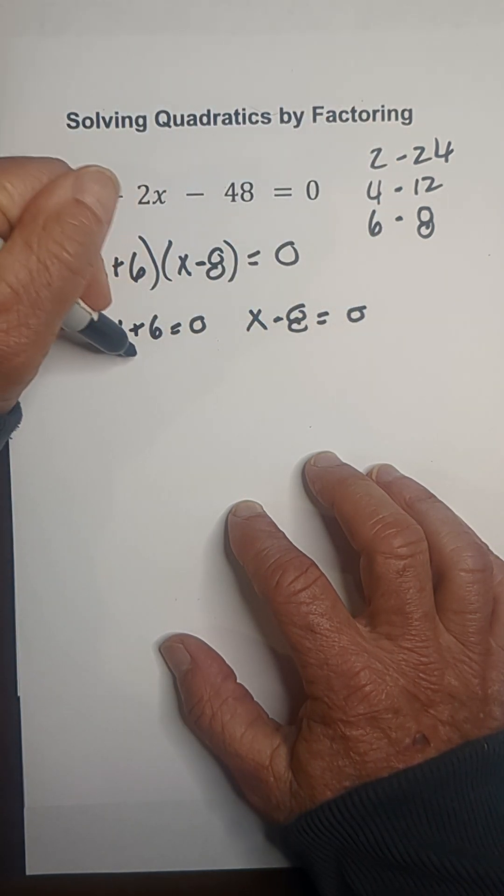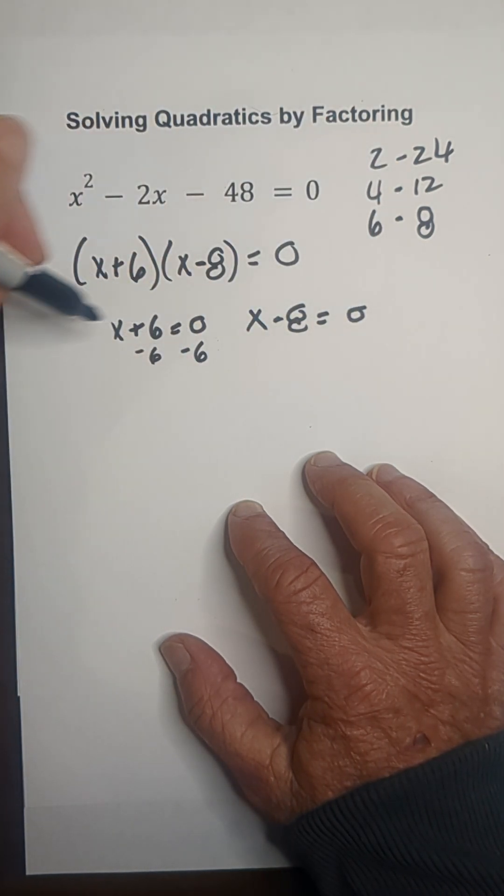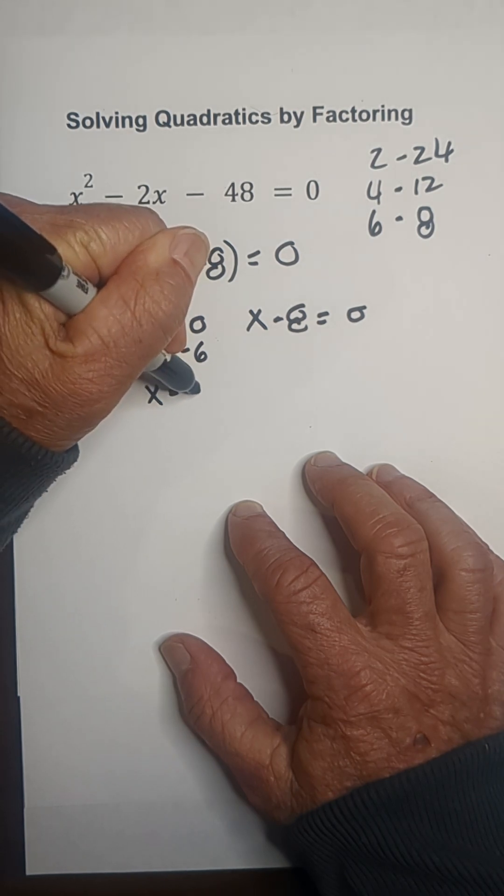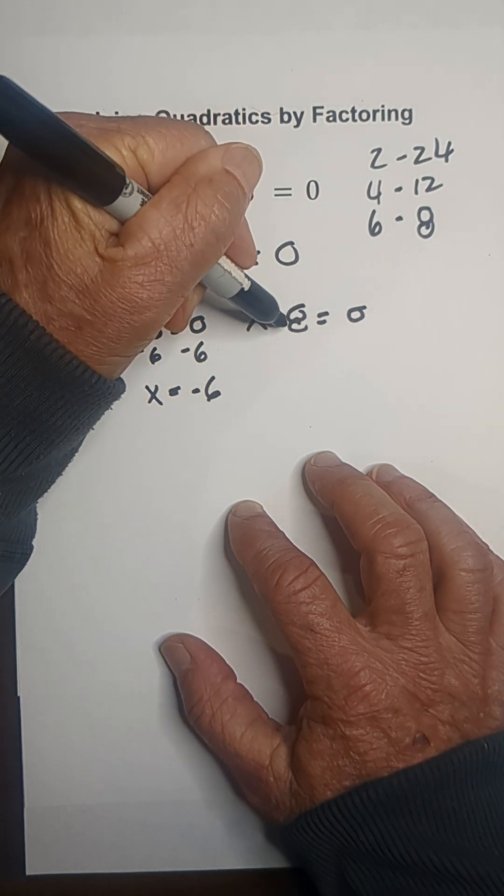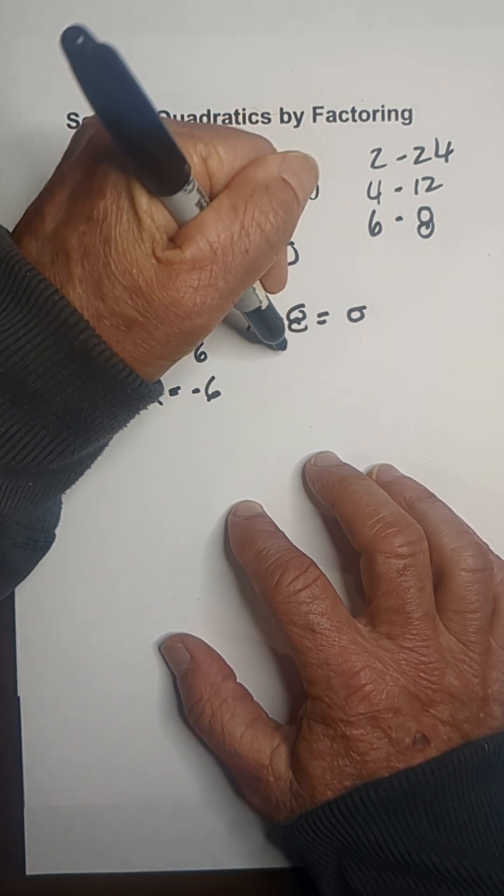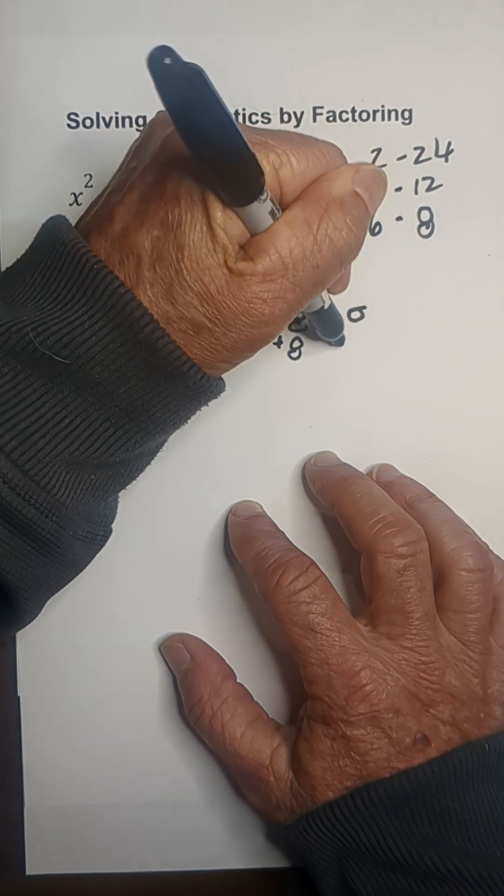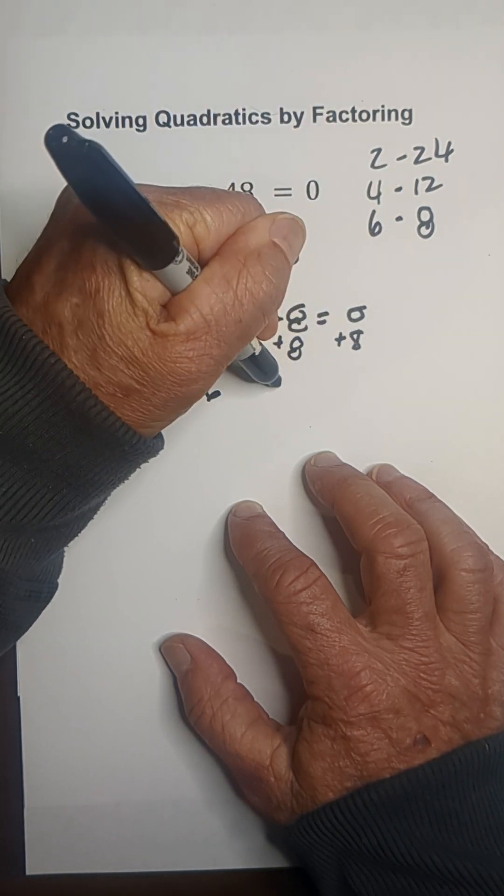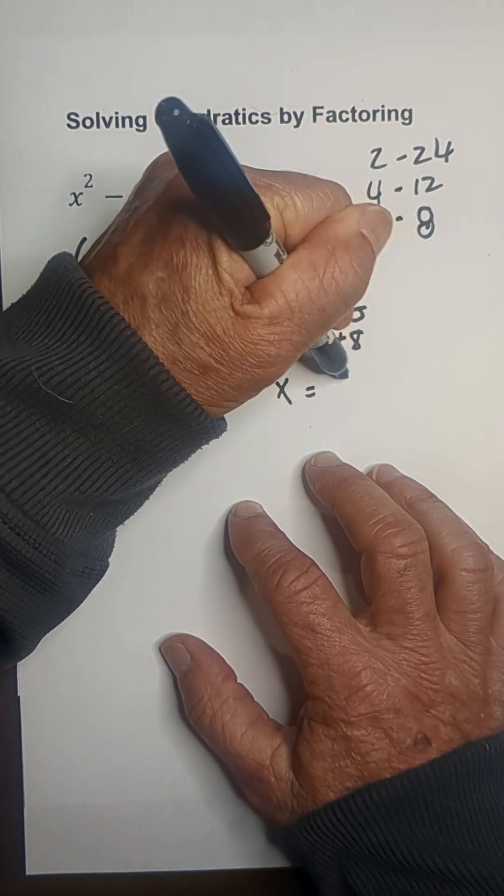Get the x by itself. I'm going to subtract 6 from both sides, so this becomes x equals negative 6. And I'm going to set this x by itself, so I'm going to add 8 and that becomes x equals 8.